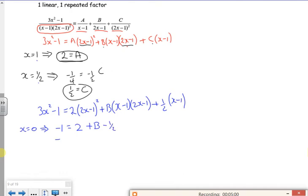So I've got minus 1 is 1 and 1 half plus B. Take that away, I've got minus 2 and 1 half, so minus 5 over 2 is B.